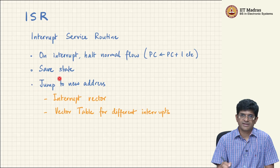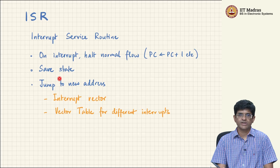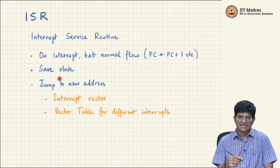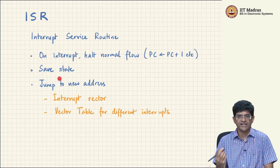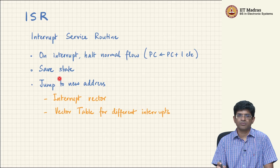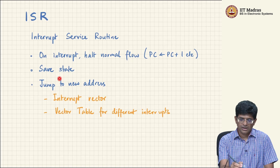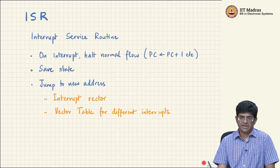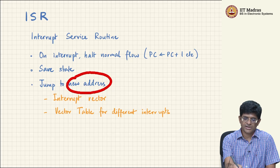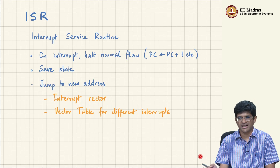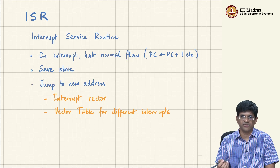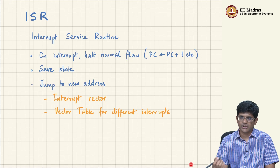I need to jump to a new address because the only thing a CPU knows how to do is fetch instructions and execute them. So the interrupt must also get translated into a process by which I fetch and execute instructions. If an interrupt comes, jump to a specific address corresponding to that interrupt. There can be different kinds of interrupts, and this new address to which I jump is called an interrupt vector. Historically it is called an interrupt vector rather than an interrupt pointer.